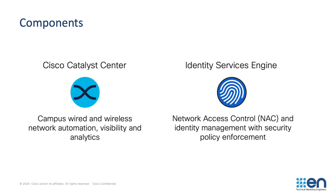Identity Services Engine offers the services of network access control, identity management, and security policy enforcement. When users and devices connect to the wired and wireless campus network, they should be authenticated and authorised before they're allowed to start communicating. This is otherwise known as network access control. ISE can demand credentials and a range of attributes from every connecting endpoint, compare them against a suite of policies, and depending on what policy is matched, a level of network access is granted.